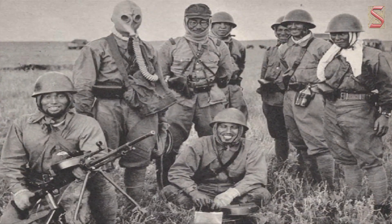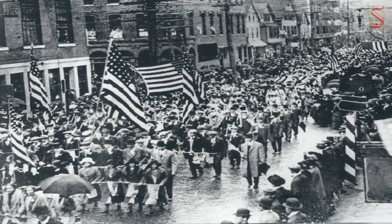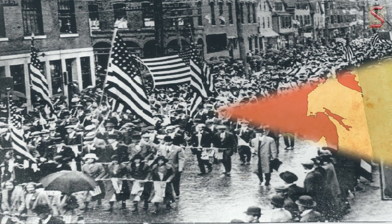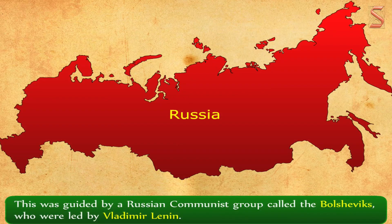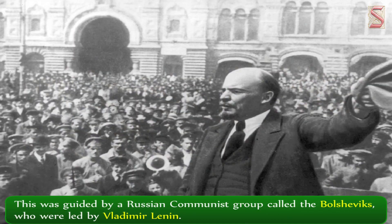The common people were not interested in the war as a result of the economic shortages and the military reversals. As a result, the people began to organize themselves into councils which were called Soviets. The Soviets of the soldiers, industrial workers and the people in rural areas served as the medium for the expression of power of the common people in the country. This was guided by a Russian communist group called the Bolsheviks, who were led by Vladimir Lenin.